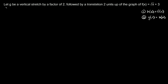So here it says let g of x be a vertical stretch by a factor of two — that's our first transformation — followed by a translation two units up, which is our second transformation, of the graph of f of x equals the square root of x plus three. The first step is just writing h of x, and we're going to use the first transformation for f of x.